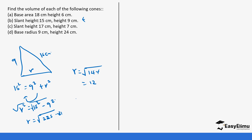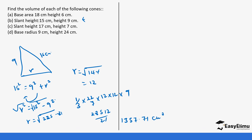Now applying the formula: one-third times 22/7 times 12 times 12 times 9. This gives 22 × 12 × 12 × 9 = 28,512 divided by 21, which equals approximately 1,357.71 cm³.